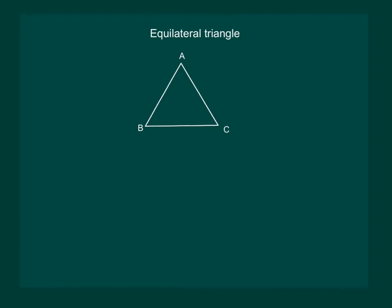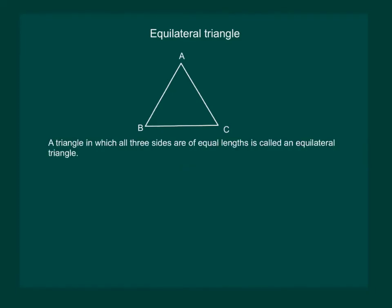We already know that a triangle in which all three sides are of equal length is called an equilateral triangle. If you measure the three angles, you will note that the measure of the three angles will also be equal. That means for an equilateral triangle, angle A equals angle B equals angle C, and each of them is 60 degrees.